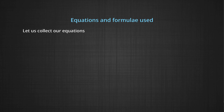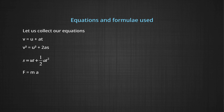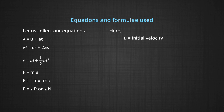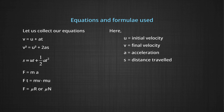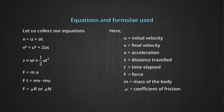Let us collect our equations: v = u + at; v² = u² + 2as; s = ut + ½at²; F = ma; Ft = mv − mu; F = μR or μN. Here, u is the initial velocity, v is the final velocity, a is the acceleration, s is the distance travelled while moving from velocity u to v, t is the time elapsed, F is the force acting, m is the mass of the body, μ is the coefficient of friction, and N or R is the normal force.